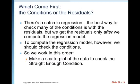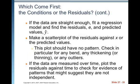We fix it by working in this order. We make a scatter plot of the data to check the straight enough condition. Then if the data are straight enough, we fit a regression model and find the residuals in the actual data, which are little e, and predicted values y hat. We make a residual plot, which is just a scatter plot of the residuals against X or the predicted value. You can use X or the y hats. I usually use X.